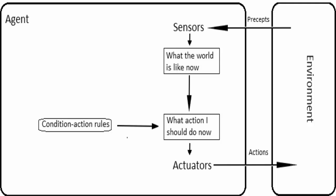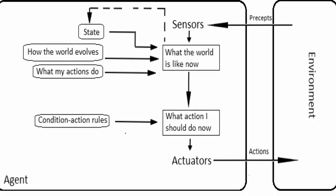Looking at the simple reflex agent: it will directly consider the current percept and perform actions without considering the previous percept history or state. It will also not consider how the world evolves. In contrast, a model-based agent does consider how the world evolves — a model of the world before the agent was placed in the environment is stored through algorithms in the knowledge base.